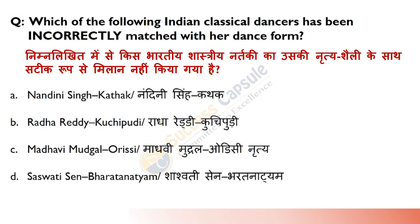Which of the following Indian classical dancers has been incorrectly matched with her dance form? Nandini Singh is related to Kathak, Radha Reddy is related to Kuchipudi, Madhvi Mudgal is related to Odissi, and Shashwati Singh is related to Kathak. Radha Reddy is not related to Kathak — she is related to Kuchipudi.